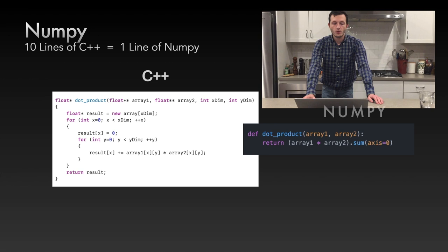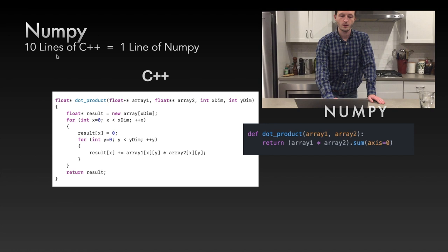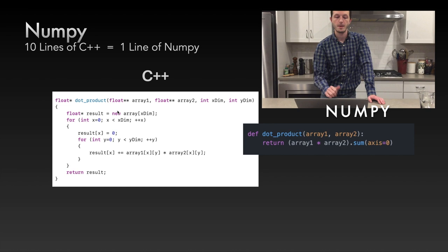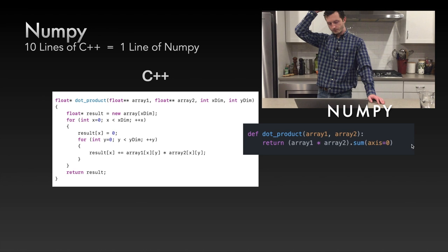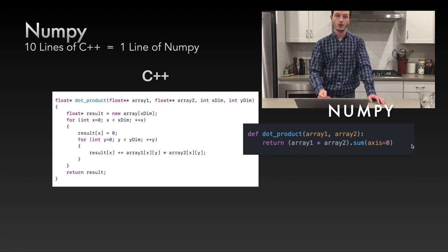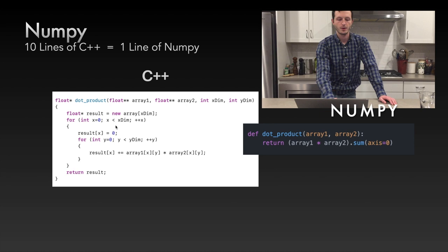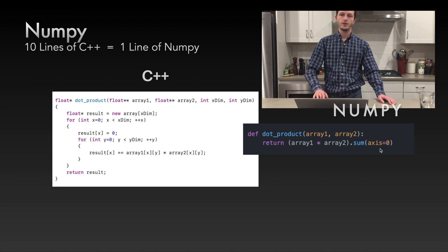The great thing about NumPy is that 10 lines of C++ will translate to one line in NumPy. For example, the dot product — in C++ you have to declare a new array in memory, clear it, loop through both dimensions, and calculate the result. In NumPy you just say array1 times array2, sum along the first axis. You're spending less time writing code, less time typing, and writing fewer bugs. The C++ code is verbose and easy to accidentally introduce errors in; the NumPy version is one readable line.